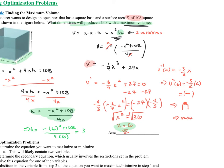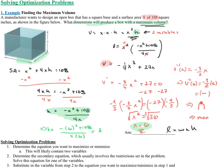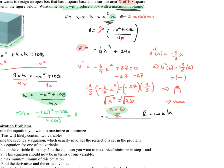Let's put it all together. The dimensions of the box are length times width times height. The problem uses inches, so: 6 inches long, 6 inches wide, and 3 inches high. The dimensions of the box that maximize the volume are 6 inches by 6 inches by 3 inches.